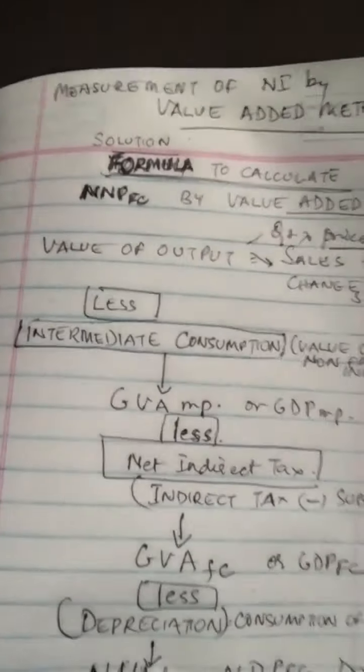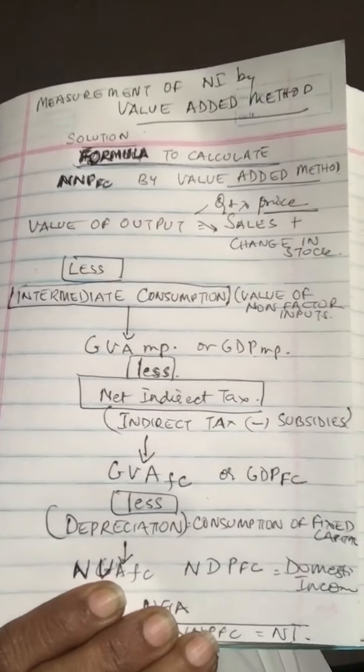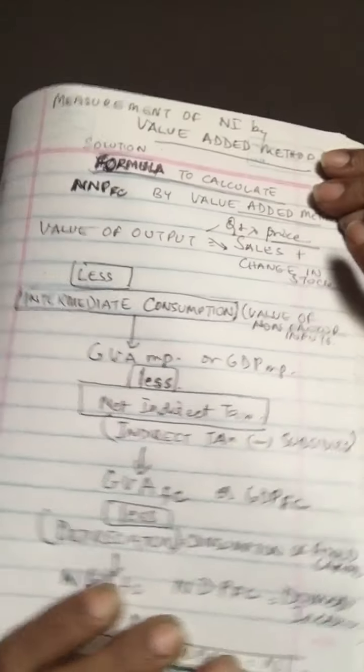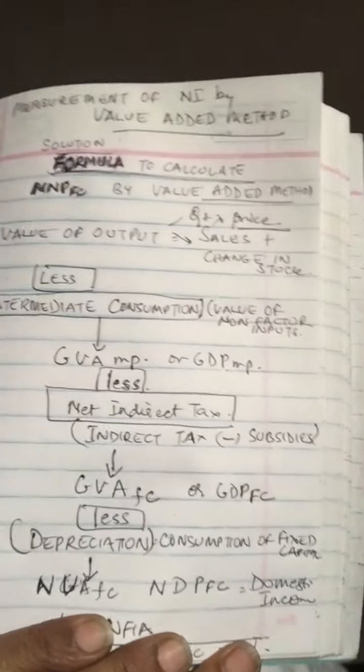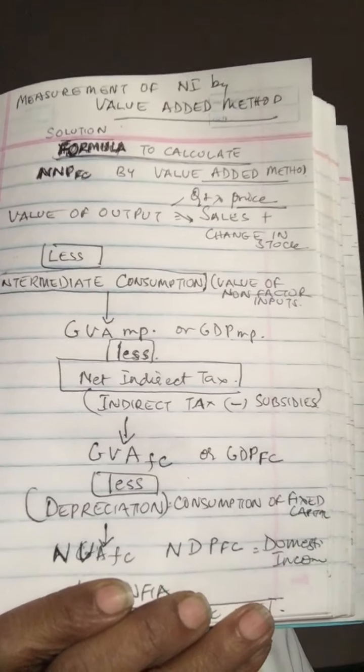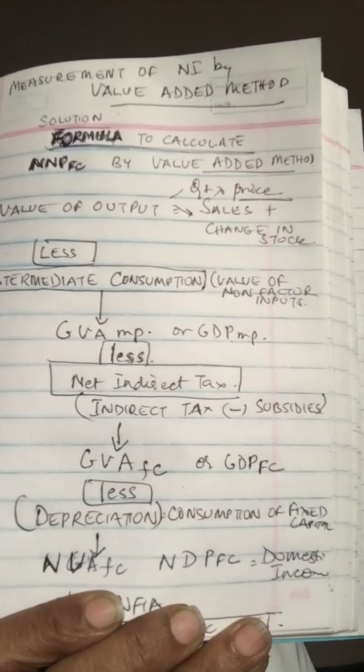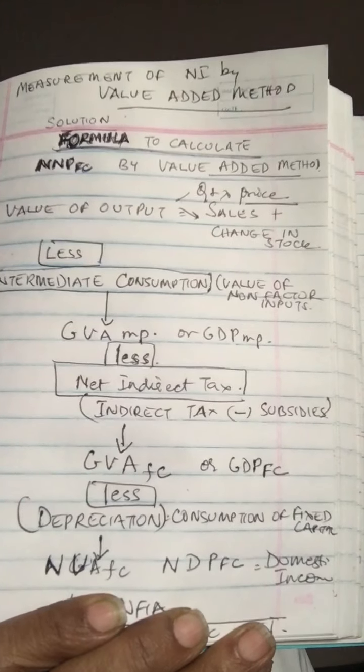Welcome back. We've just finished with measurement of national income numericals using the income and expenditure method, and now we're going to do the value-added method. Before we go on, I want to do a quick recap of the formula. In the value-added method, we first find out the value of output. Value of output is price into output, but sometimes stocks are there, so it's sales plus change in stock.